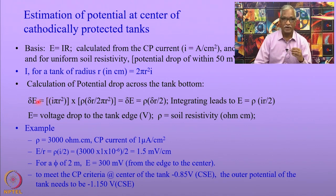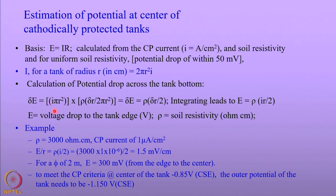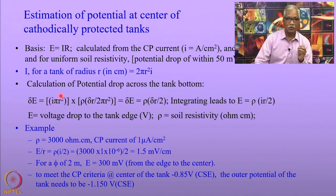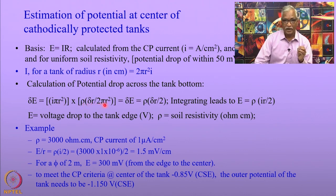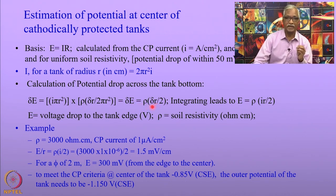The next step is to calculate the potential drop across the tank. The potential drop ΔE is given by the equation: π r² (representing total current) times ρ Δr / (2π r²). If you solve this equation, it becomes ΔE = ρ × Δr / 2.